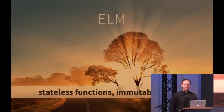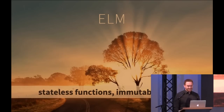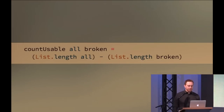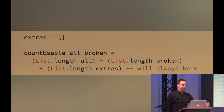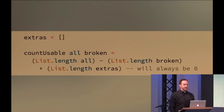How can we stop the madness? Let me tell you about Elm. Elm is all stateless functions, all immutable values, all const all the time. Here is `countUsable` in Elm: you put arguments before the equals sign. `countUsable all broken = List.length all - List.length broken`. Let's try to break it: `extras = []`, and `countUsable` incorporates `List.length extras`. But `extras` is always a const — it can never be reassigned and it's immutable, so it can never be pushed to or popped from. `List.length extras` will literally always be zero.